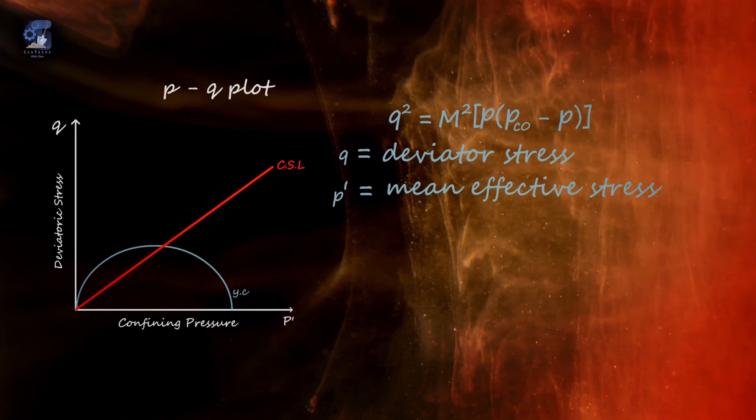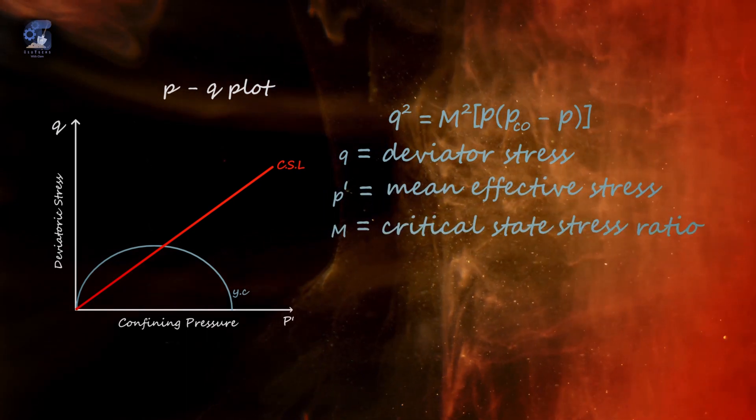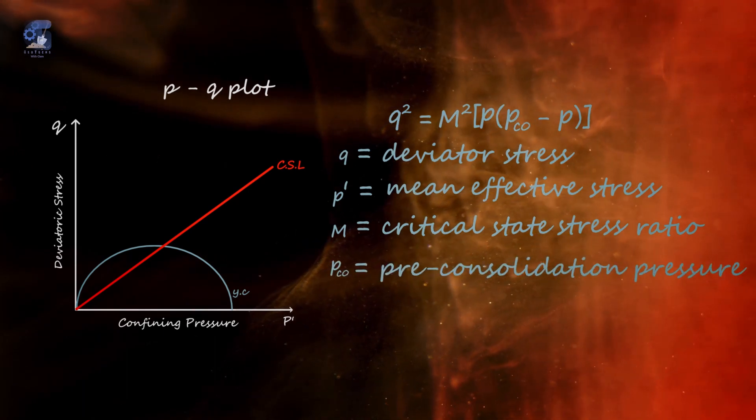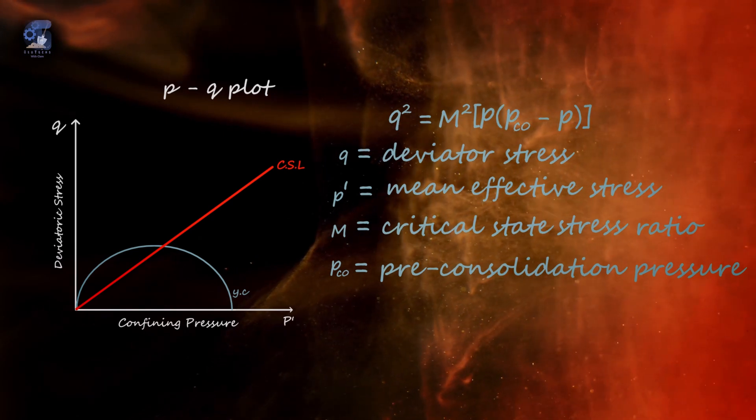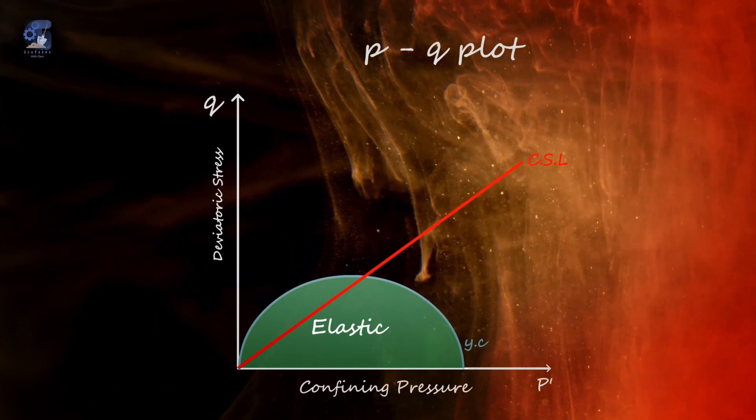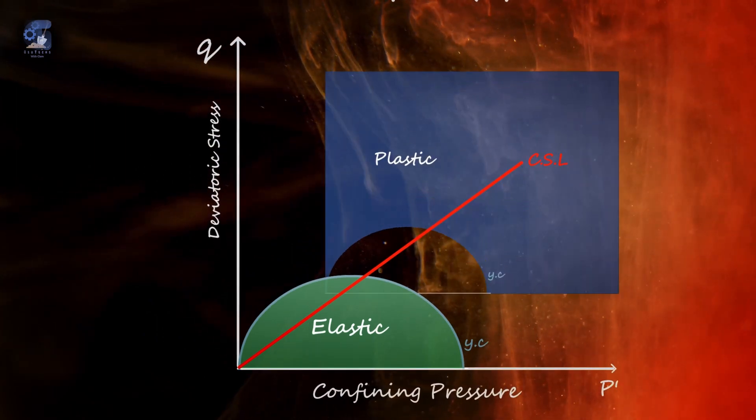P' is the mean effective stress, M is the critical state value of the stress ratio, and P' is the pre-consolidation pressure, which is related to the stress history of the soil. The inside of the yield curve represents elastic deformations, and the outside represents plastic deformations.